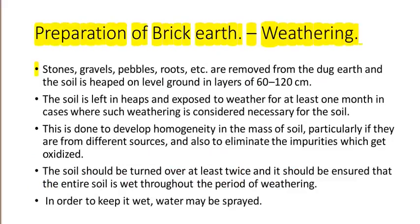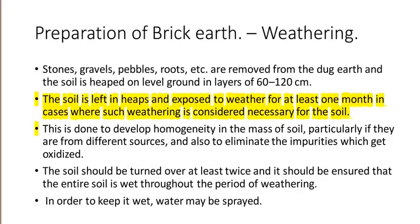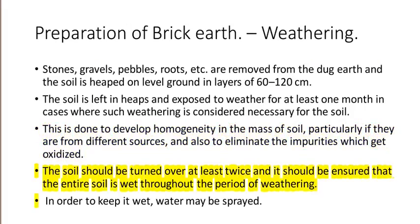Preparation of brick earth — Weathering. Stones, gravels, pebbles, roots, etc., are removed from the dug earth and the soil is heaped on level ground in layers of 60 to 120 cm. The soil is left in heaps and exposed to weather for at least one month where such weathering is considered necessary. This is done to develop homogeneity in the mass of soil, particularly if they are from different sources, and to eliminate impurities which get oxidized. The soil should be turned over at least twice and kept wet throughout the weathering period. Water may be sprayed to keep it wet.